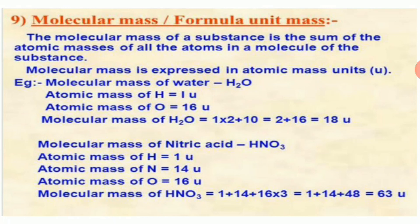For nitric acid HNO₃: molecular mass = atomic mass of H + atomic mass of N + 3 × atomic mass of O = 1 + 14 + (3 × 16) = 1 + 14 + 48 = 63 u. If it is a molecule, this is called molecular mass; if it is a formula unit (e.g., ionic compounds), it is called formula mass. The molecular mass of any substance is the sum of the atomic masses of all atoms present in that molecule.